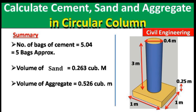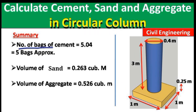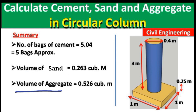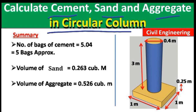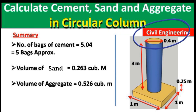To summarize: for a circular column with these dimensions, you need approximately 5 bags of cement, 0.263 cubic meters of sand, and 0.526 cubic meters of aggregate. You can apply this same method for circular columns of different dimensions. Please like this video and subscribe for new civil engineering updates. Thank you.